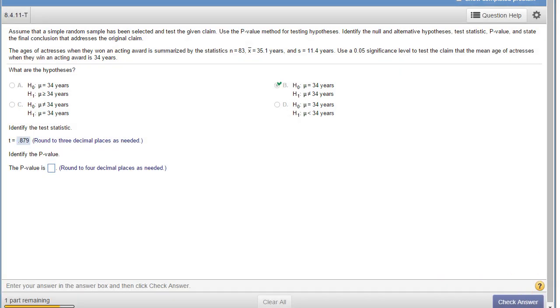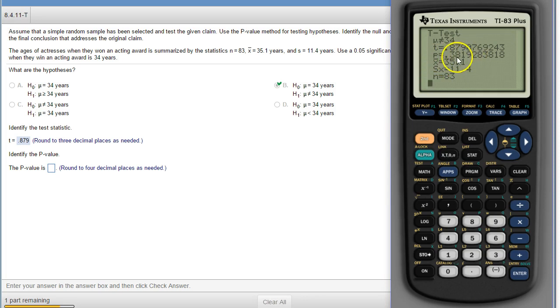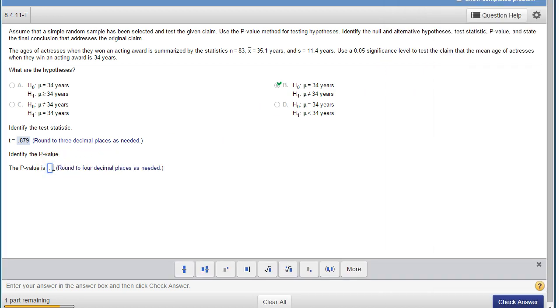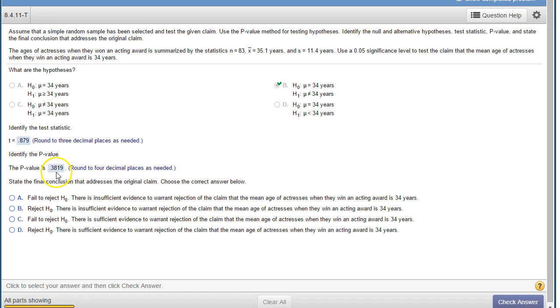And then the p-value is the very next thing down. This is the p-value. So four places, .3819.